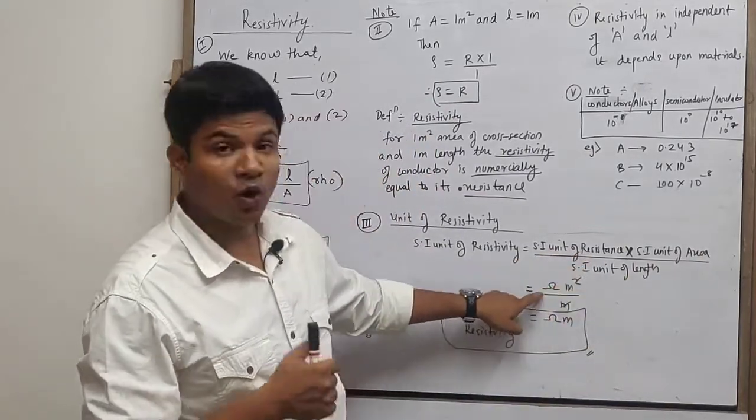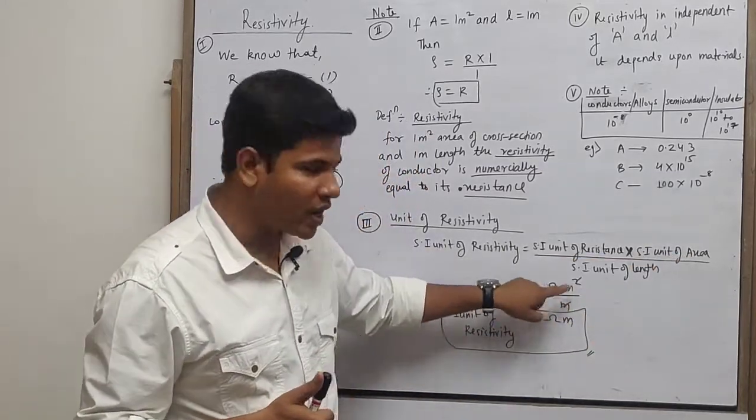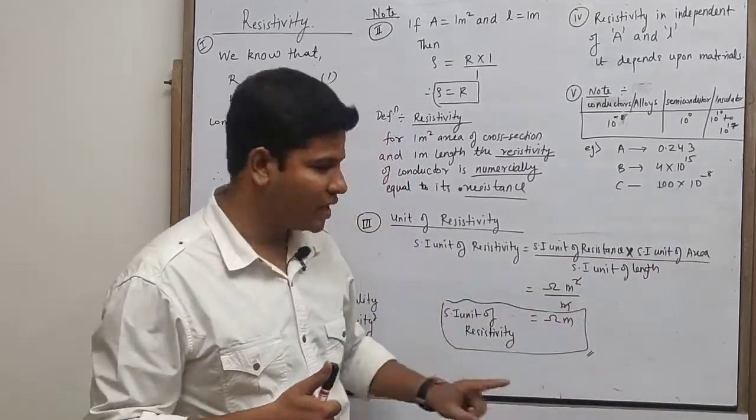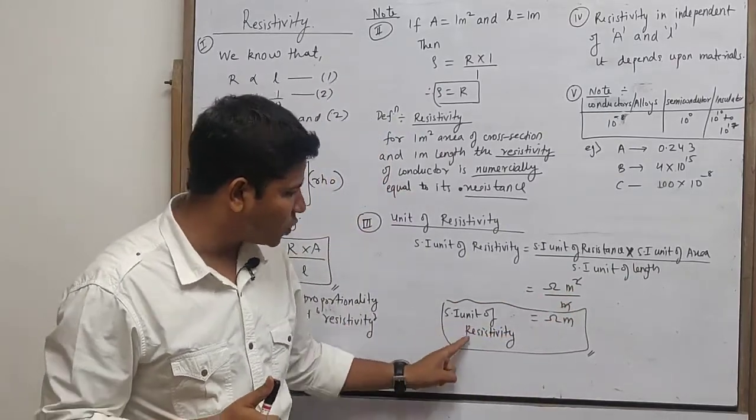SI unit of resistance is ohm. SI unit of area is meter square. SI unit of length is meter. Meter and meter square cancel one meter, so resistivity SI unit is ohm meter.